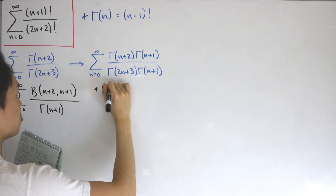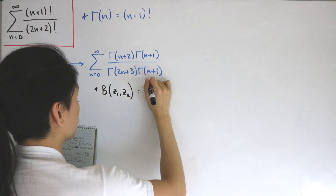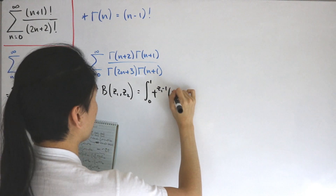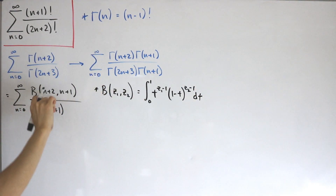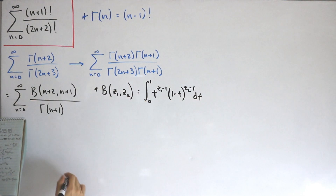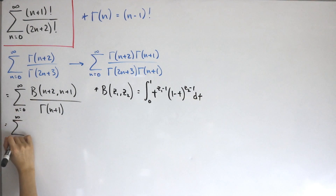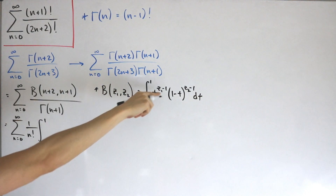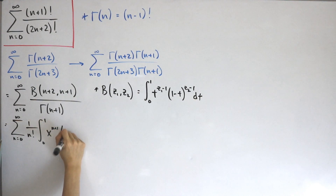Keep in mind the integral representation of the beta function: B(z₁, z₂) equals the integral from 0 to 1 of t^(z₁-1)·(1-t)^(z₂-1) dt. Replacing our inputs and working in terms of x, and converting Γ(n+1) back to n!, we get the sum from n=0 of (1/n!) times the integral from 0 to 1 of x^(n+1)·(1-x)^n dx.